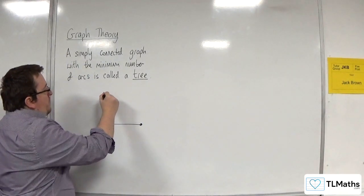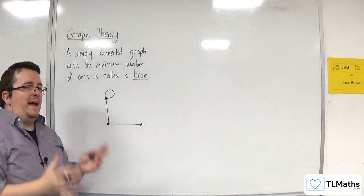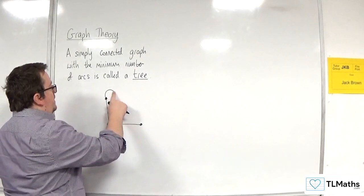If one of the vertices had a loop, well we can't have that either because a simple graph cannot have a loop. So we can't have that.